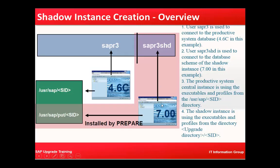As an example, we are using a 7.0 system, so the schema for that is SAP<SID>. This is your schema and the user which connects to the shadow instance. The productive system central instance uses executables and profiles from the /usr/sap/<SID>/CD directory, while a separate folder is created for the upgrade where all shadow instance-related files are placed.